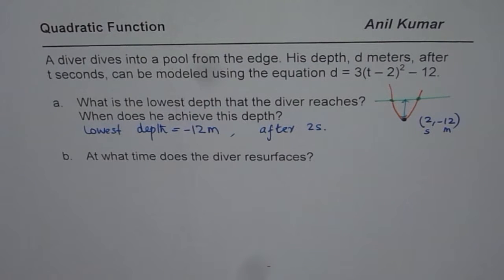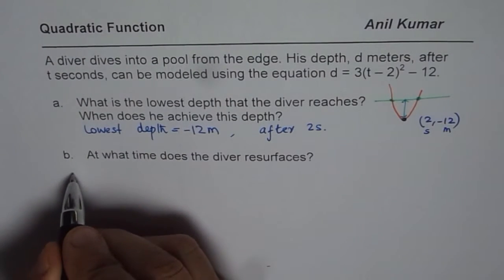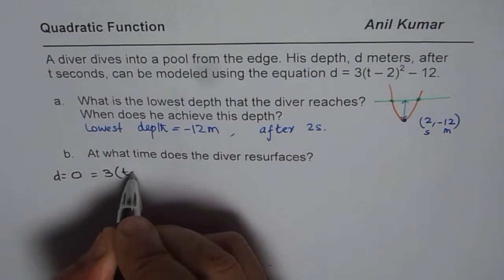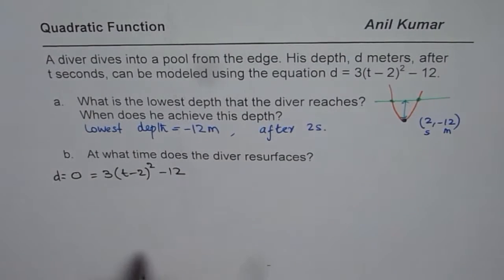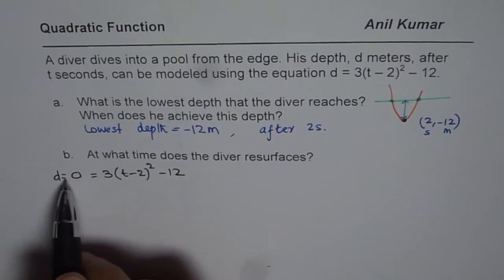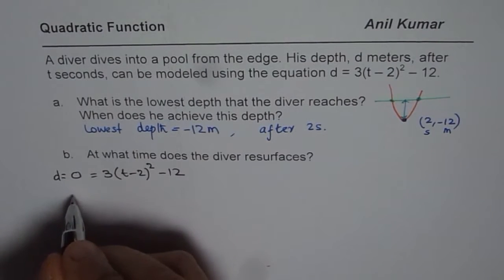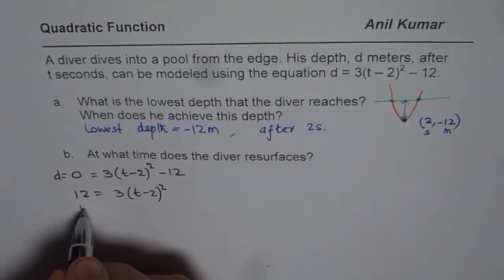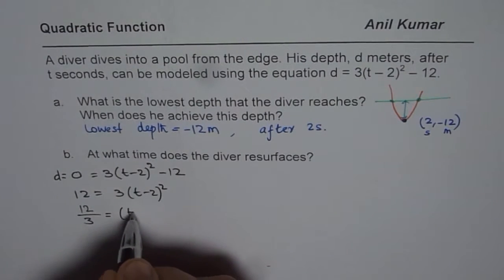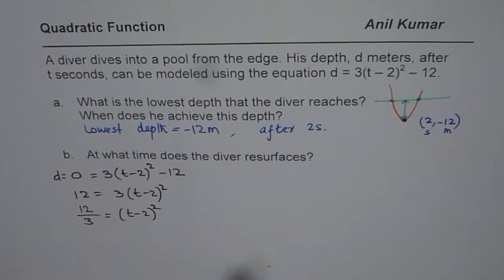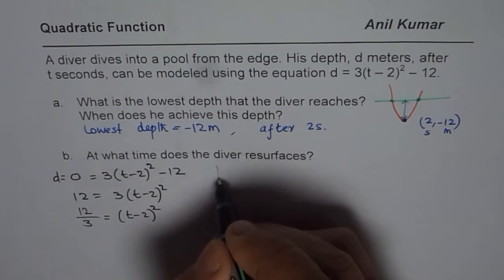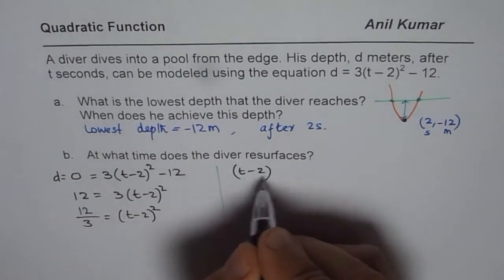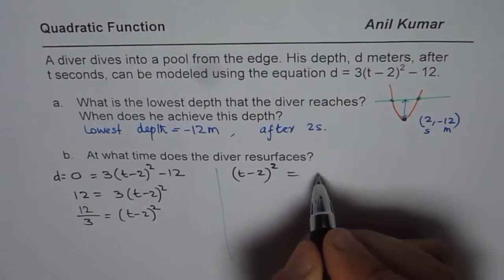So basically now, we need to solve this equation for depth d = 0. We can write the equation, which is 3(t - 2)² - 12, and solve for t when depth is 0. We will bring 12 to this side. We get 12 = 3(t - 2)² divided by 3. So we get 12/3 = (t - 2)². Twelve divided by 3 is 4, so (t - 2)² = 4.